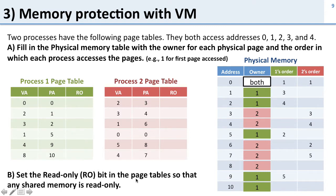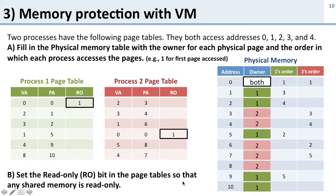The second part is setting the read-only bit so any shared memory is read-only. The only shared data is address 0, so we need to set the read-only bits for the page mappings from virtual 0 to physical 0 for both processes. The point of this problem is to show that although two processes access the same virtual addresses, they use data in very different ways because they have different mappings in their page tables.